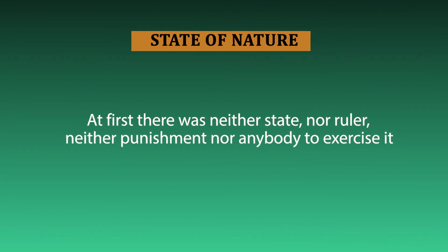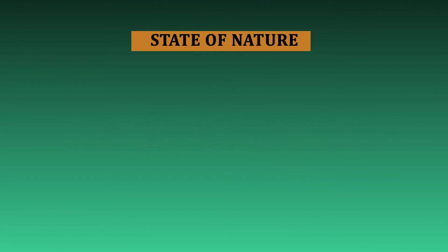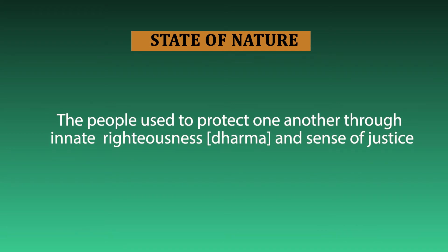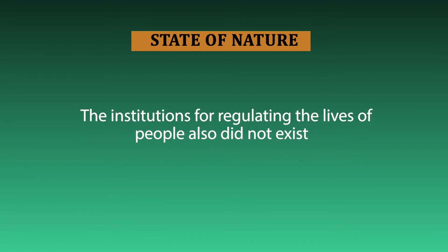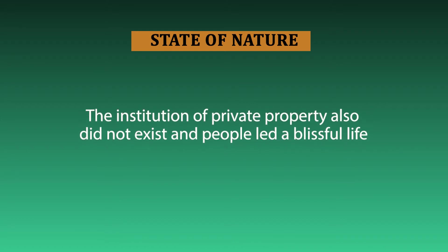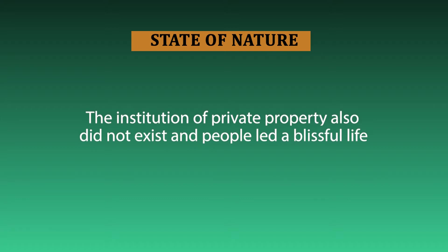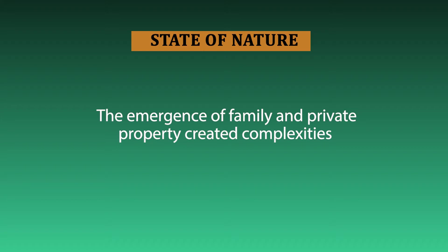At first there was neither state, nor ruler, nor punishment — it was a state of perfect bliss and happiness. The Shanti Parva explicates that in the state of nature there was no fighting and no regulations were required. The institution of private property also did not exist. It was a happy state of coexistence. However, complications started with the emergence of the family and private property.